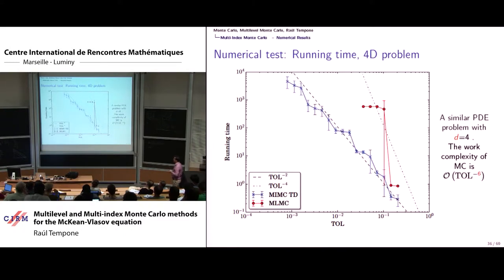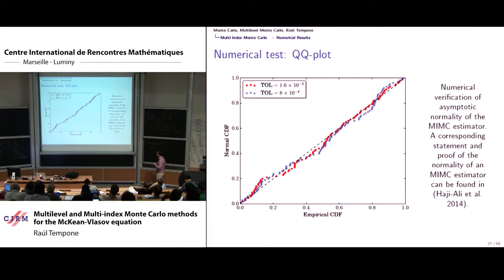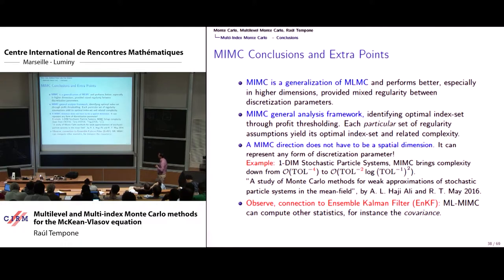Going to four dimensions: Monte Carlo gives complexity tolerance to the minus 6, multi-level gives tolerance to the minus 4, and multi-index Monte Carlo still gives tolerance to the minus 2. This is also where memory runs out for multi-level Monte Carlo while the other can keep going. So you can solve larger problems with the same approach.